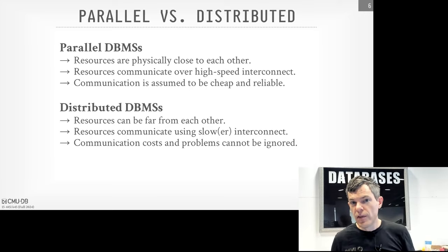Parallel execution is super important, and pretty much every major database system does some variation of it. Even SQLite — which is sophisticated but is an embedded database system without all the features of Oracle, DB2, or SQL Server — supports parallel execution and does inter-query parallelism with multiple readers and a single writer. But all the things you need to get right — coordinating different workers, scheduling them, handling writes, managing concurrent disk reads — you have to account for all these when building things out. Ideally, you don't want to rely on the operating system to manage disk IO and other things for you.